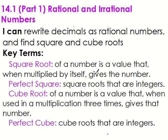Today we're going to rewrite decimals as rational numbers — as ratios instead of as decimals — and also talk about finding square and cube roots. Decimals are rational numbers because I can write them as a ratio. Square roots and cube roots, some are rational, and the ones we're going to talk about today are rational. A square root of a number is a value that when you multiply it by itself, it gives you the number. For example, two is the square root of four because two times two gets me four.